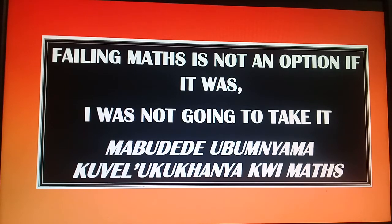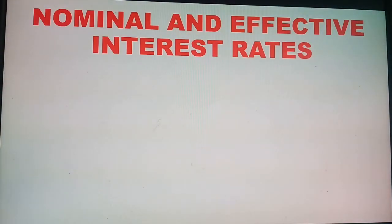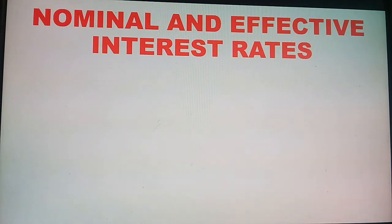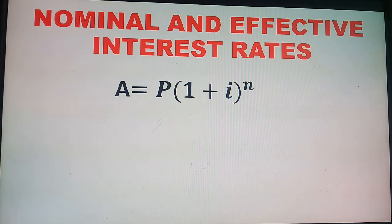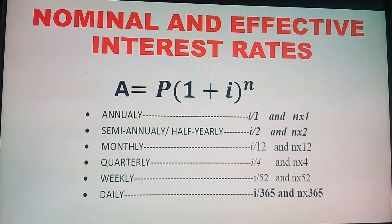In nominal and effective interest rates, the first thing we have is what we call a nominal and effective interest rate, and we have to know how to convert between the nominal interest rate and effective interest rate using the formula. We also have to remind ourselves the compound interest formula: A equals P into 1 plus i, exponent n. Please watch my other video where I explain what A, P, i, and n stand for.